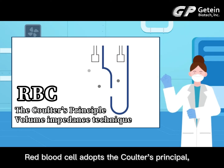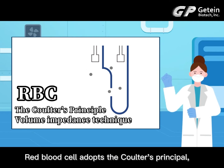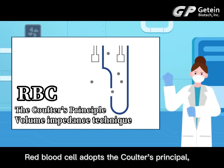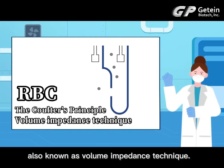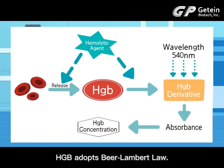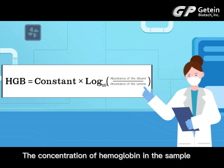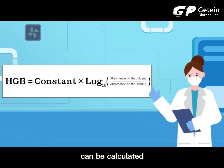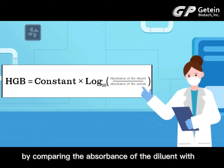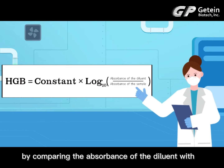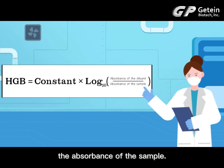Red blood cell analysis adopts Coulter's principle, also known as volume impedance technology. Hemoglobin measurement adopts the Beer-Lambert law. The concentration of hemoglobin in the sample can be calculated by comparing the absorbance of the diluent with the absorbance of the sample.